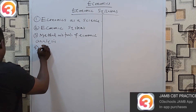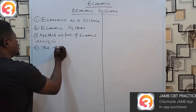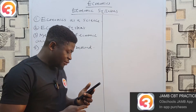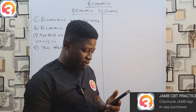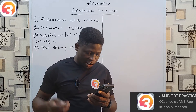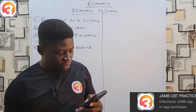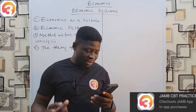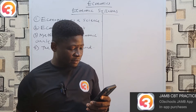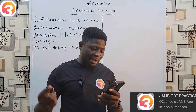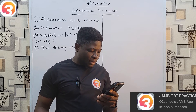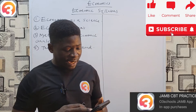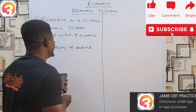Number four is the Theory of Demand. Look at the meaning and determinants of demand, demand schedules and curves, and the distinction between change in quantity demanded and change in demand. Look at types of demand: composite, derived, competitive, and joint demand. Look at the types, nature, and determinants of elasticity and their measurements. Also look at the importance of elasticity of demand to consumers, producers, and the government.